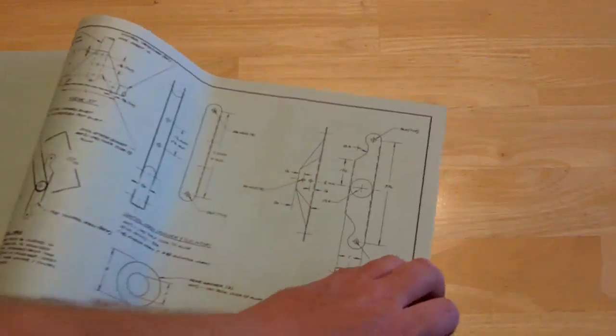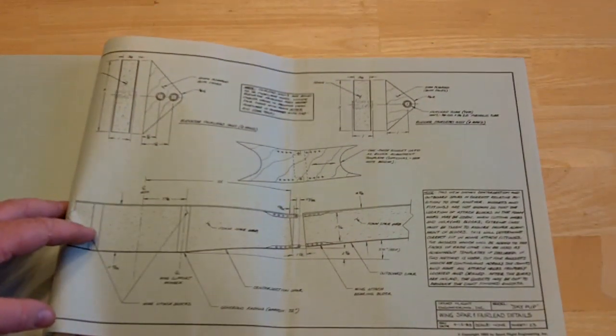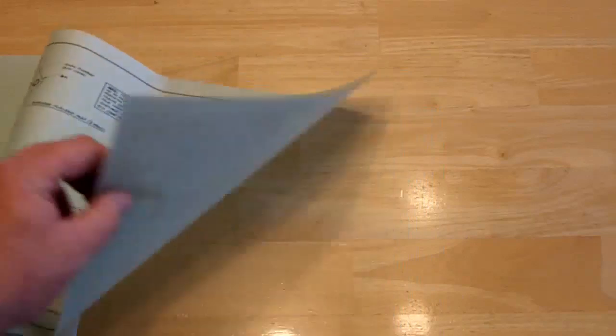Here's the control system. And I think we got one more page. Wing spar and various details. And that's it for the prints. Pretty nice.